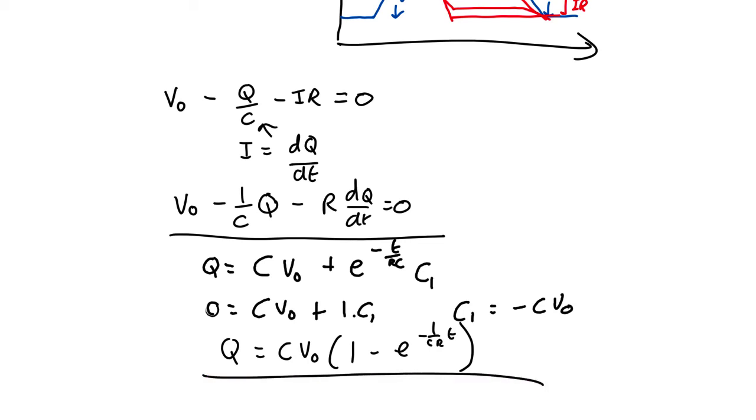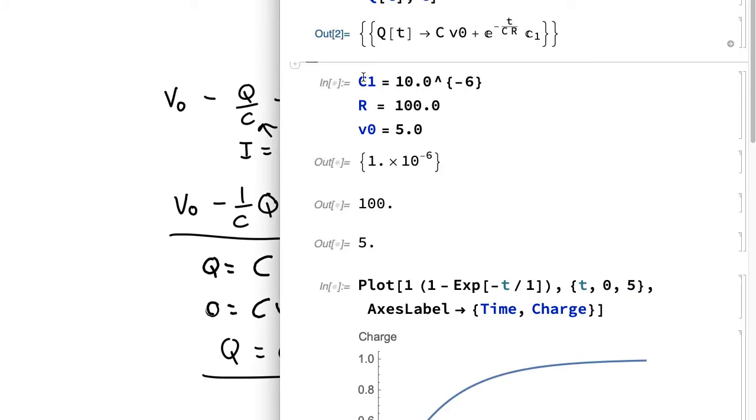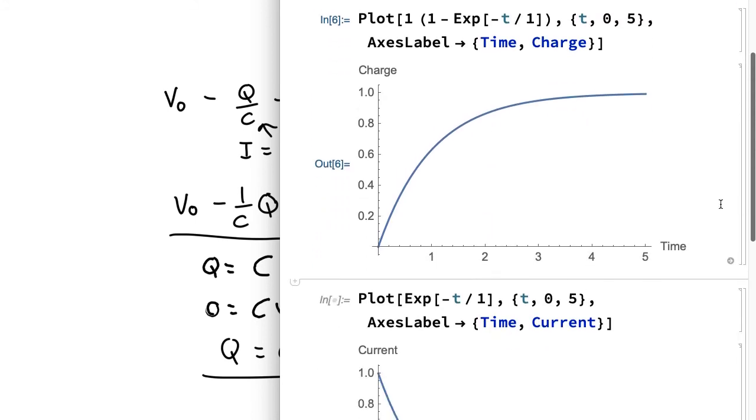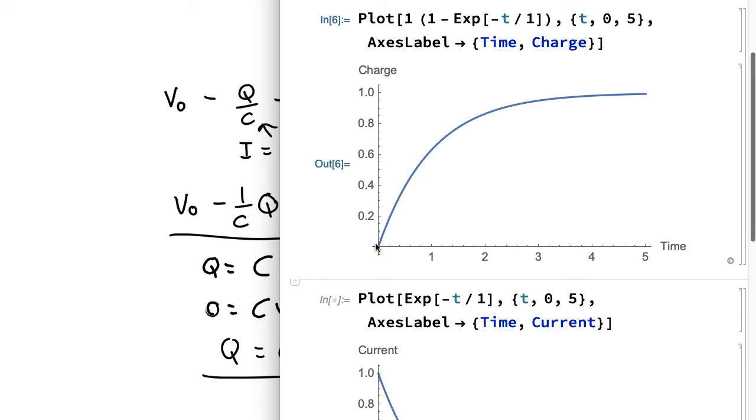What does that look like? Let's get Mathematica to show us. So we'll give it some values for the capacitance, resistance and voltage. And then we'll plot things. And you see what's here is the charge starts out at zero, rises up and then flattens out.